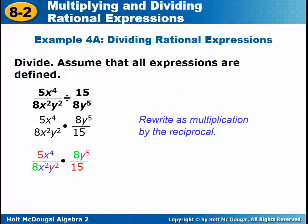First, switch it to multiplication. Second, look for common factors. Right away, 8 and 8 can cancel. 5 goes into 15 three times. Now for what's left, you can write it out all together, so we'd have on the bottom X squared over Y squared. Don't forget there's going to be a 3 left in the denominator.